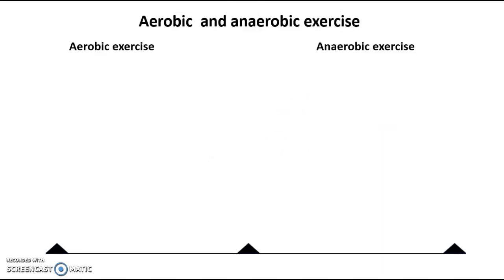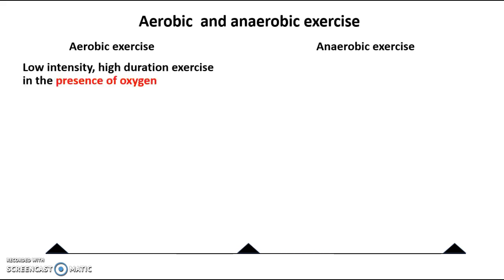Before we start, it's really important when talking about muscle fibres that you have an understanding of the difference between aerobic and anaerobic exercise. A lot of you will have covered this in GCSE biology and GCSE PE. Let's get an idea of what aerobic and anaerobic exercise are before we look at the different muscle fibres and how they work. Aerobic exercise is a combination of low intensity and high duration exercise, and the key thing is it occurs in the presence of oxygen.